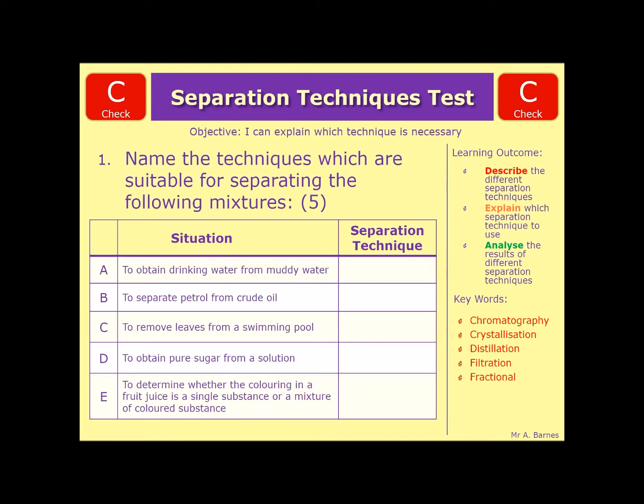You should have had a go at the question by now, let's have a look at the answers. A: if you want to obtain drinking water from muddy water, the best technique there is simple distillation. To separate petrol from crude oil where you've got a mixture of different substances, your best one there is fractional distillation.